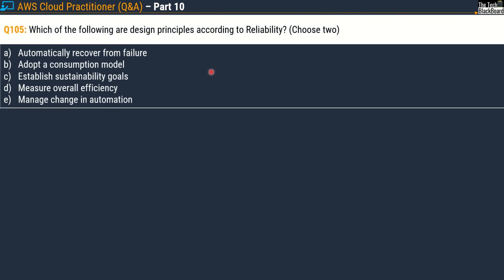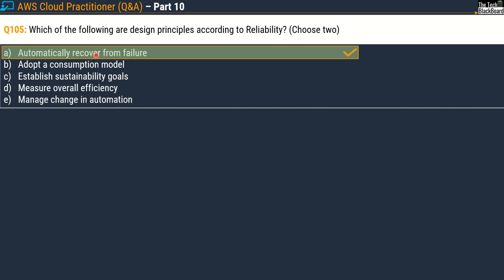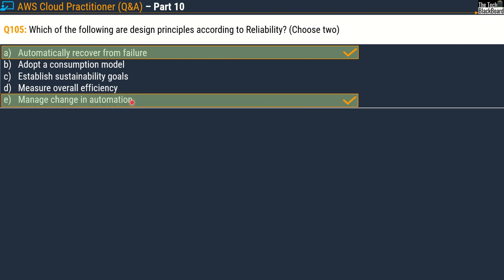Question 105 asks: which of the following are design principles according to reliability — choose two. Options are: option A, automatically recover from failure; option B, adopt a consumption model; option C, establish sustainability goals; option D, measure overall efficiency; and option E, manage change in automation. The correct answers are option A, automatically recover from failure, and option E, manage changes in automation.